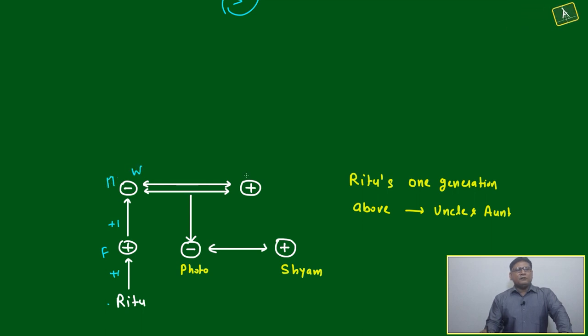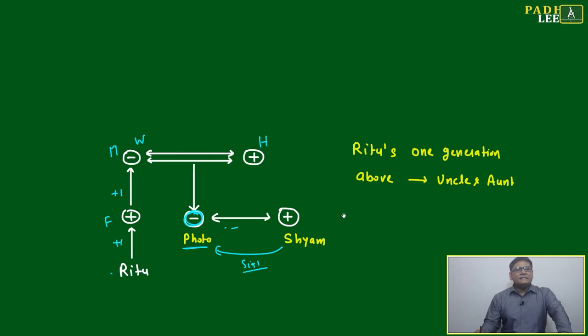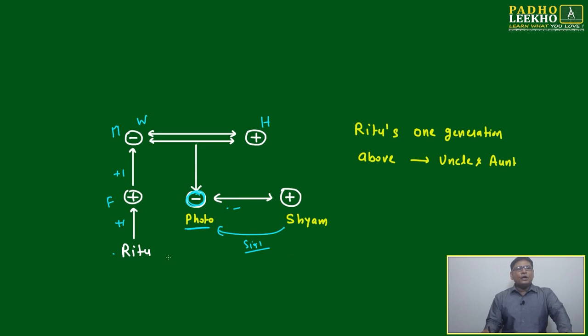These husband and wife have one girl, which is in the photo, which is the sister of Shyam. This is a double-headed arrow, which means one thing is very sure: Ritu and Shyam are interrelated with one generation of gap, not the same generation.